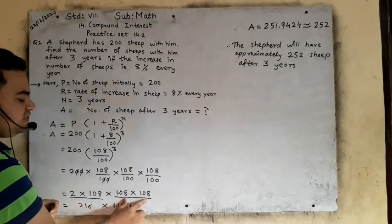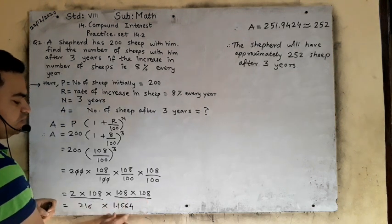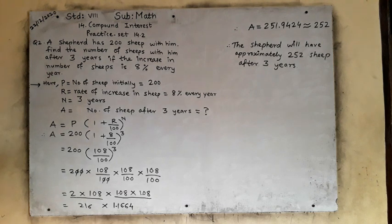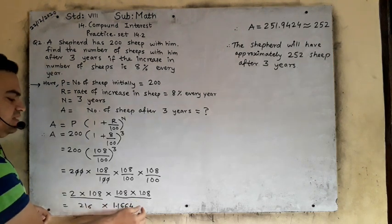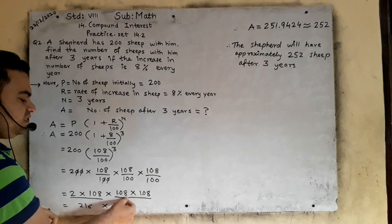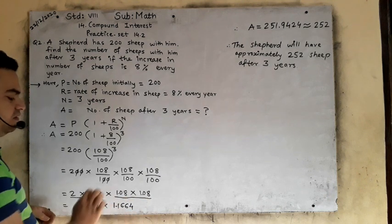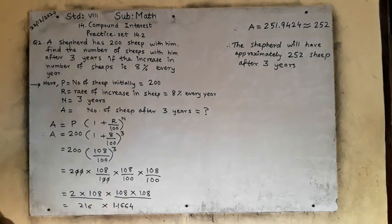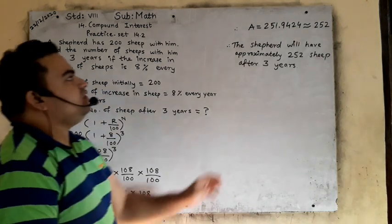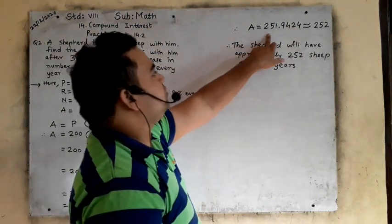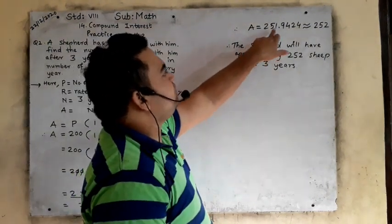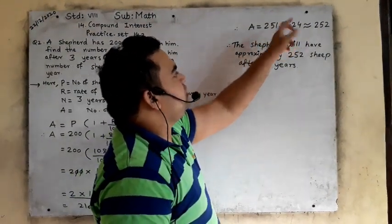We will multiply these two as well. The answer will be 1.1664. Then we multiply this again, giving 2 digits after the decimal. After 4 digits there will be a decimal point. Now we multiply these two and the answer will come out to 251.9424.